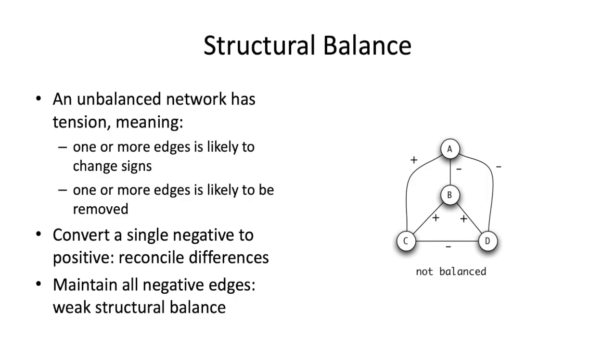We're going to change from positive to negative, or one of these edges is likely to be removed. But we've already talked about how the contextual factors kind of keep them together, like you're just stuck together. And so issues happen. B, C and D, that one's also unbalanced.